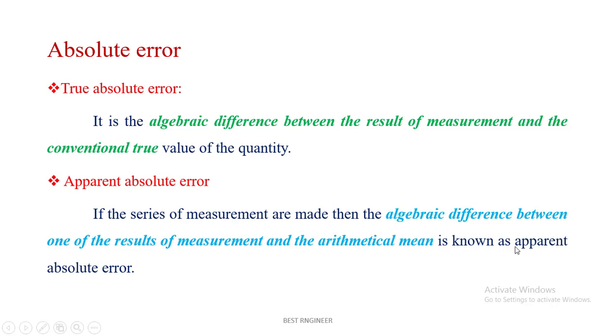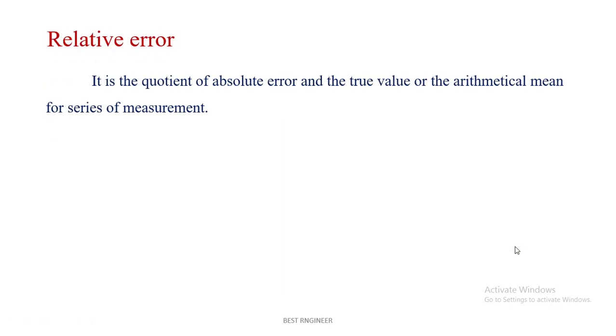Relative error is the quotient of absolute error and the true value of arithmetic mean for a series of measurements. This is called relative error.